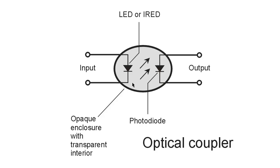at slightly longer wavelengths than visible red light. Here's a little schematic diagram showing the actual symbol for an opto-isolator, and it shows the anatomy pretty well. You put the input signal to a light-emitting diode (LED) or infrared-emitting diode (IRED), and it radiates through this transparent interior substance such as plastic to a photodiode, whose current varies depending upon the instantaneous intensity of the light or infrared energy striking it.